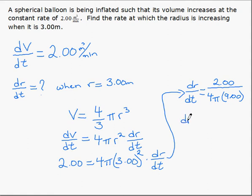Final answer then, the rate of change of the radius with respect to time is 2 over 36 pi, so that reduces to 1 over 18 pi, and the units would be meters per minute.